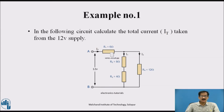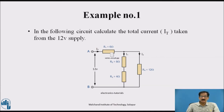Let us take Example number 1. In the following circuit, calculate the total current IT taken from the 12V supply. The circuit consists of a 12 ohm resistance on the right-hand side, then 8 ohm, then 4 ohm, then 6 ohm. These two resistances are in series.